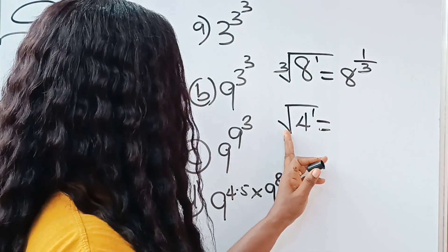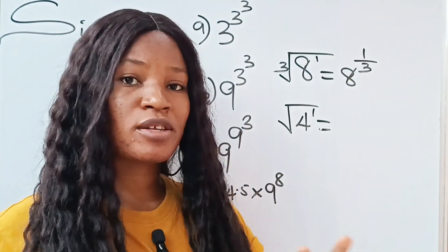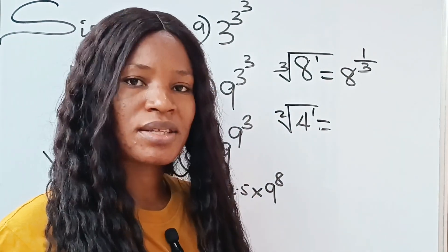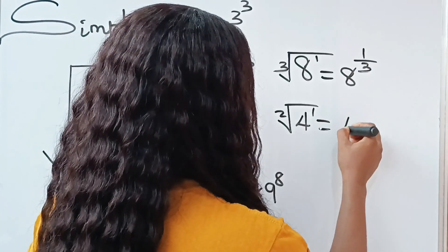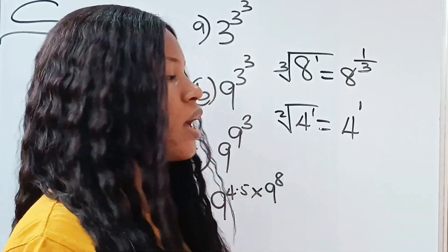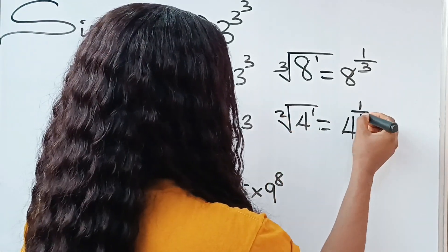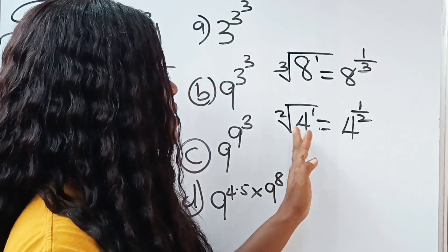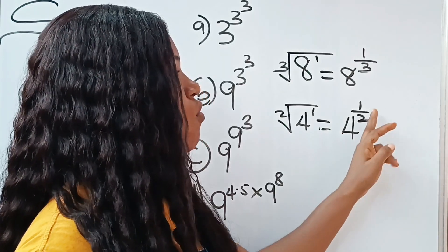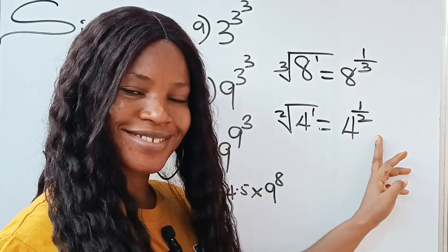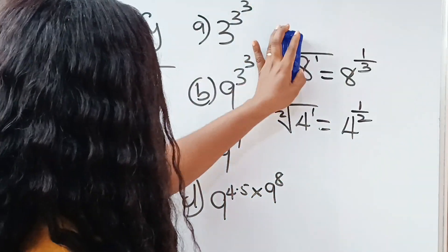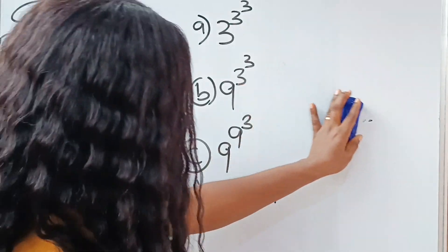The same thing applies with the square root of four. Four is the same as four to the power of one, and the square root means you multiply twice to get four, so there is an invisible two. That means we can write this as four to the power of one over two. So the square root of four can be written as four to the power of one over two.